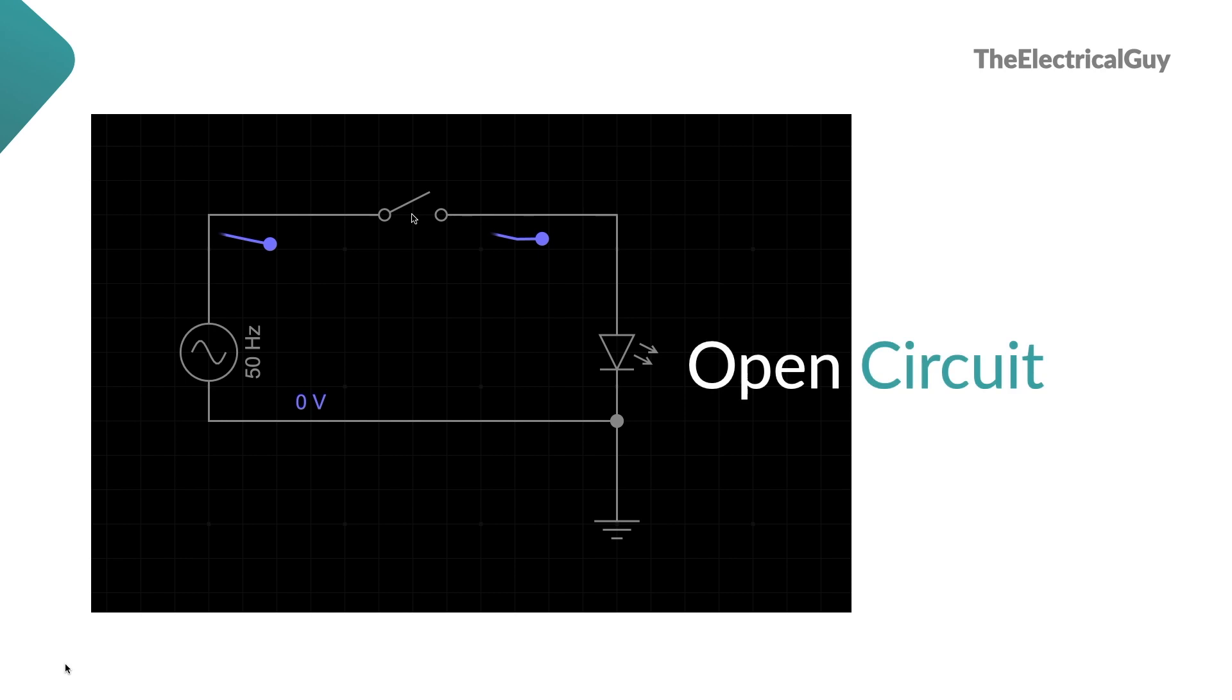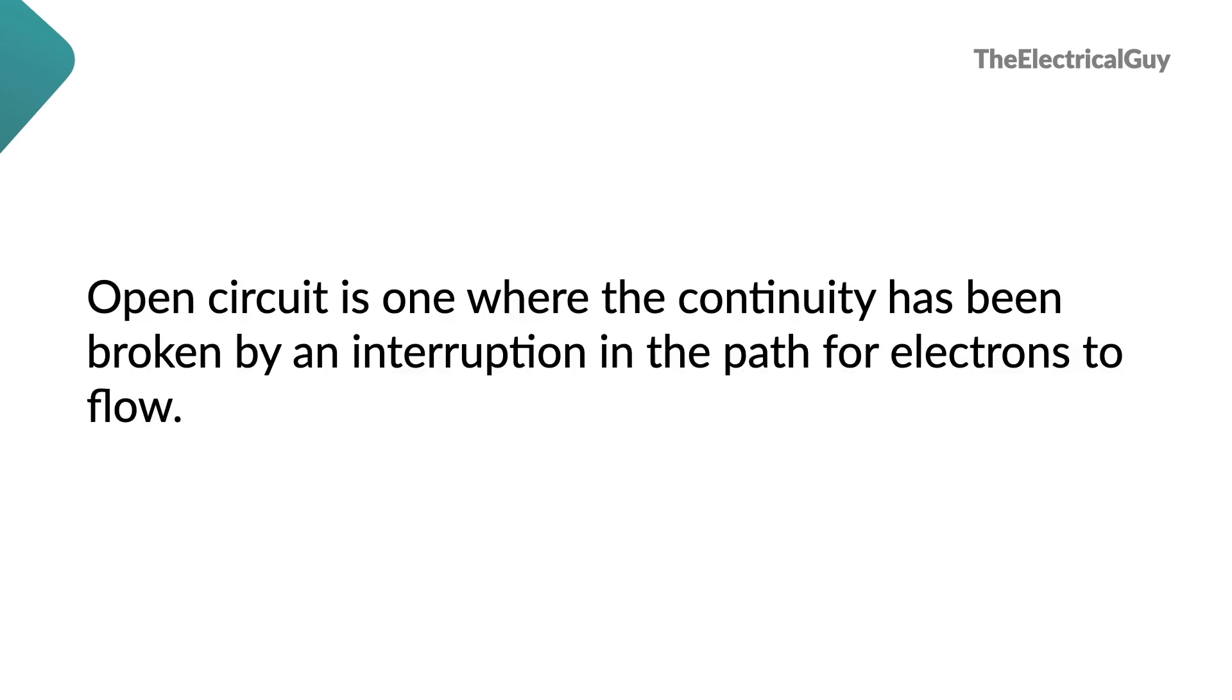This situation is called as open circuit. So by definition, an open circuit is one where the continuity has been broken by an interruption in the path for electrons to flow.